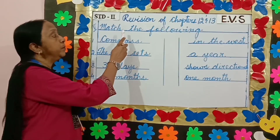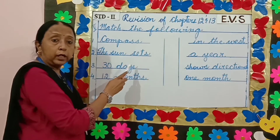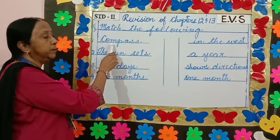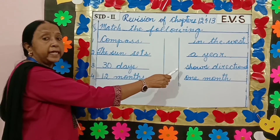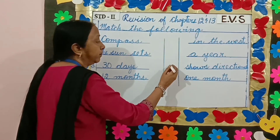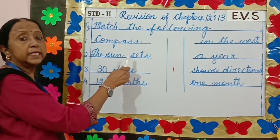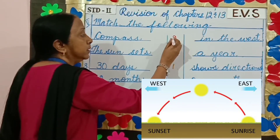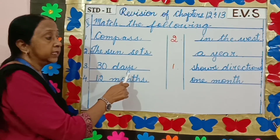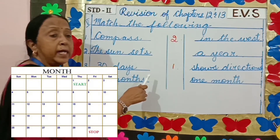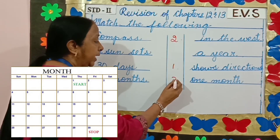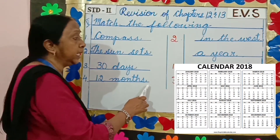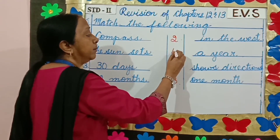Now children, we will do match the following. You have to match from this column to that column. Compass shows us the direction, so we write number 1. The sun sets in the west, so we write number 2. 30 days makes 1 month, so we write number 3. 12 months makes a year, so we write number 4.